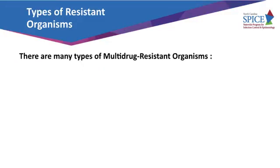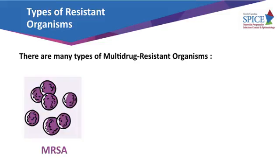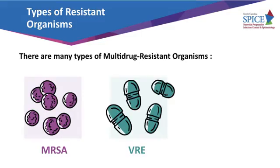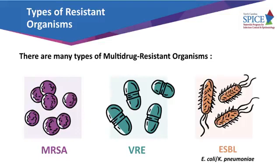There are many multidrug-resistant organisms that can colonize or infect nursing home residents, but there are 3 that are most common: methicillin-resistant Staphylococcus aureus, or MRSA; vancomycin-resistant enterococci, or VRE; and extended-spectrum beta-lactamase-producing E. coli, or ESBL E. coli.